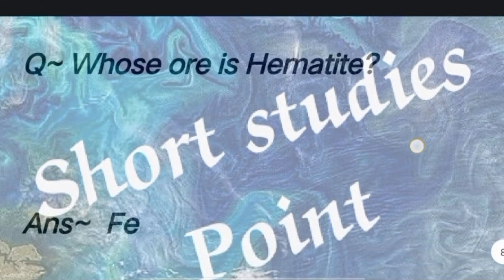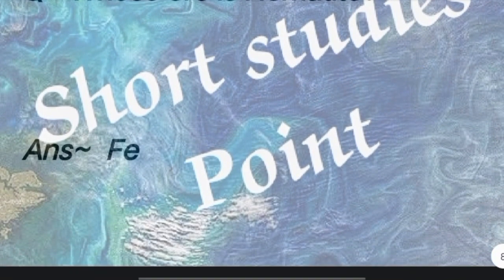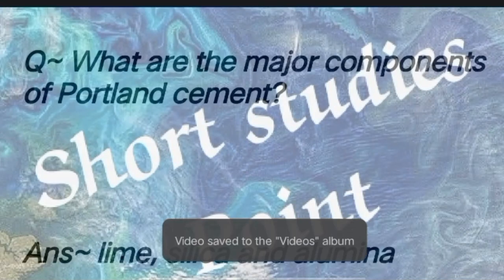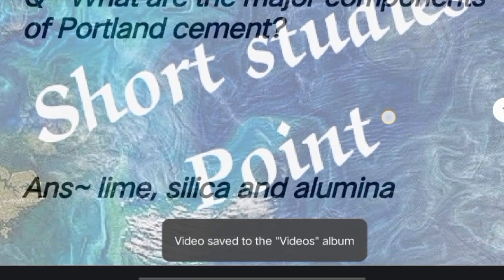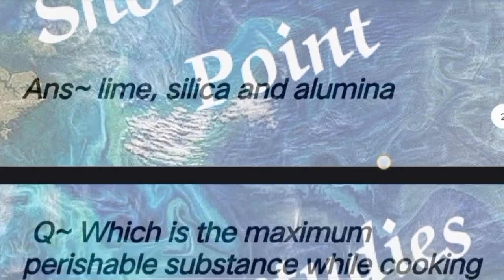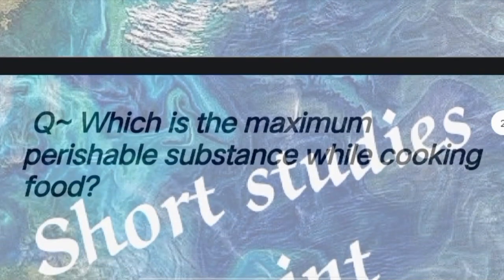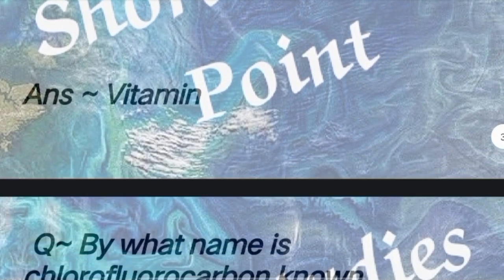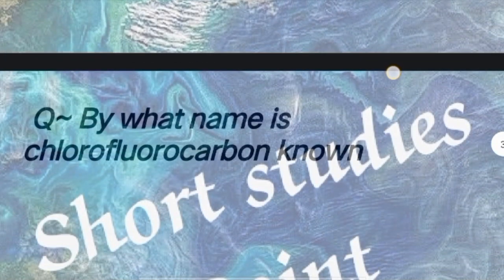Question: Whose ore is hematite? Answer: Iron (Fe). Question: What are the major components of Portland cement? Answer: Lime, silica, and alumina. Next question: Which is the maximum destructible substance while cooking food? Answer: Vitamin.